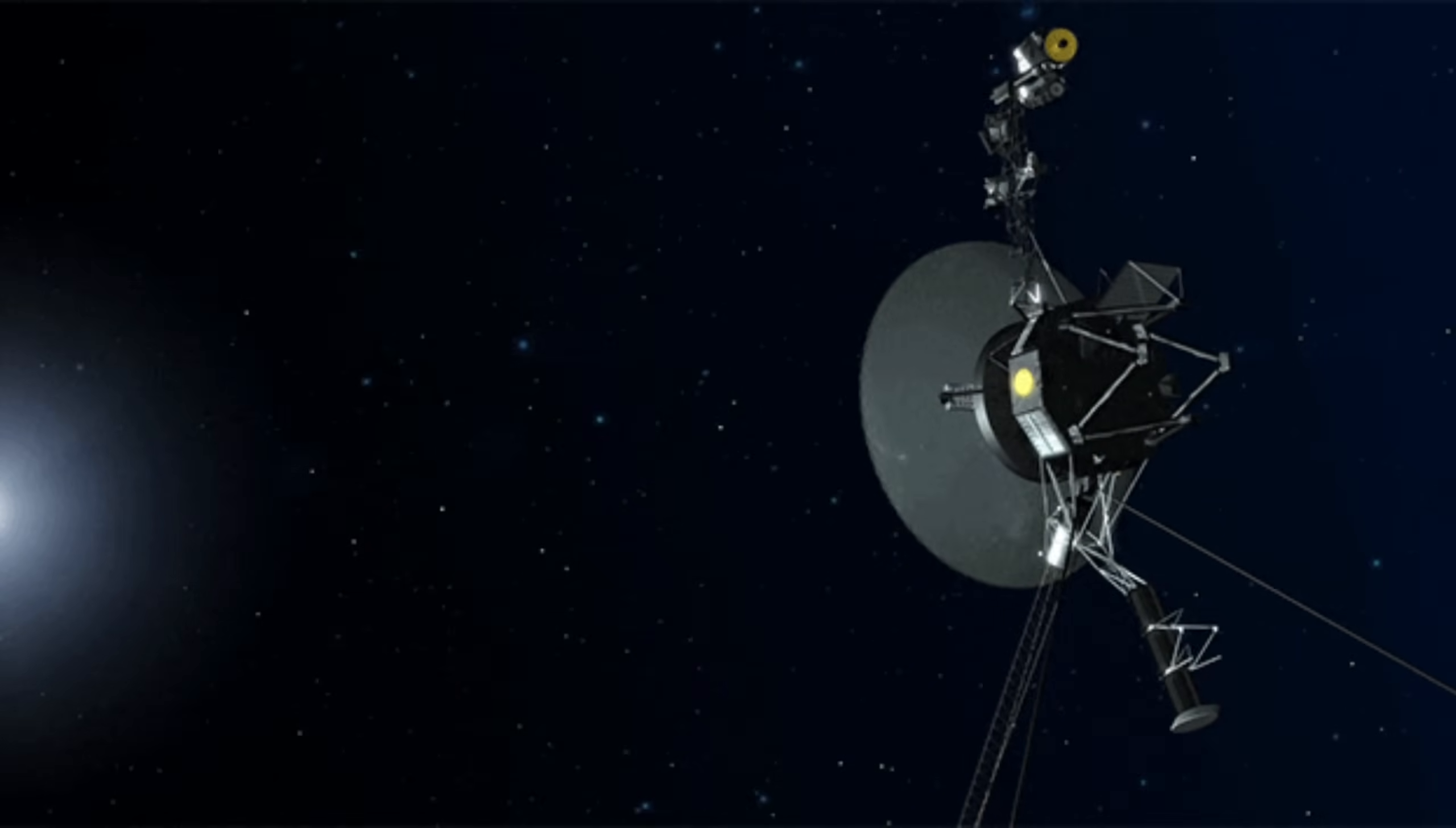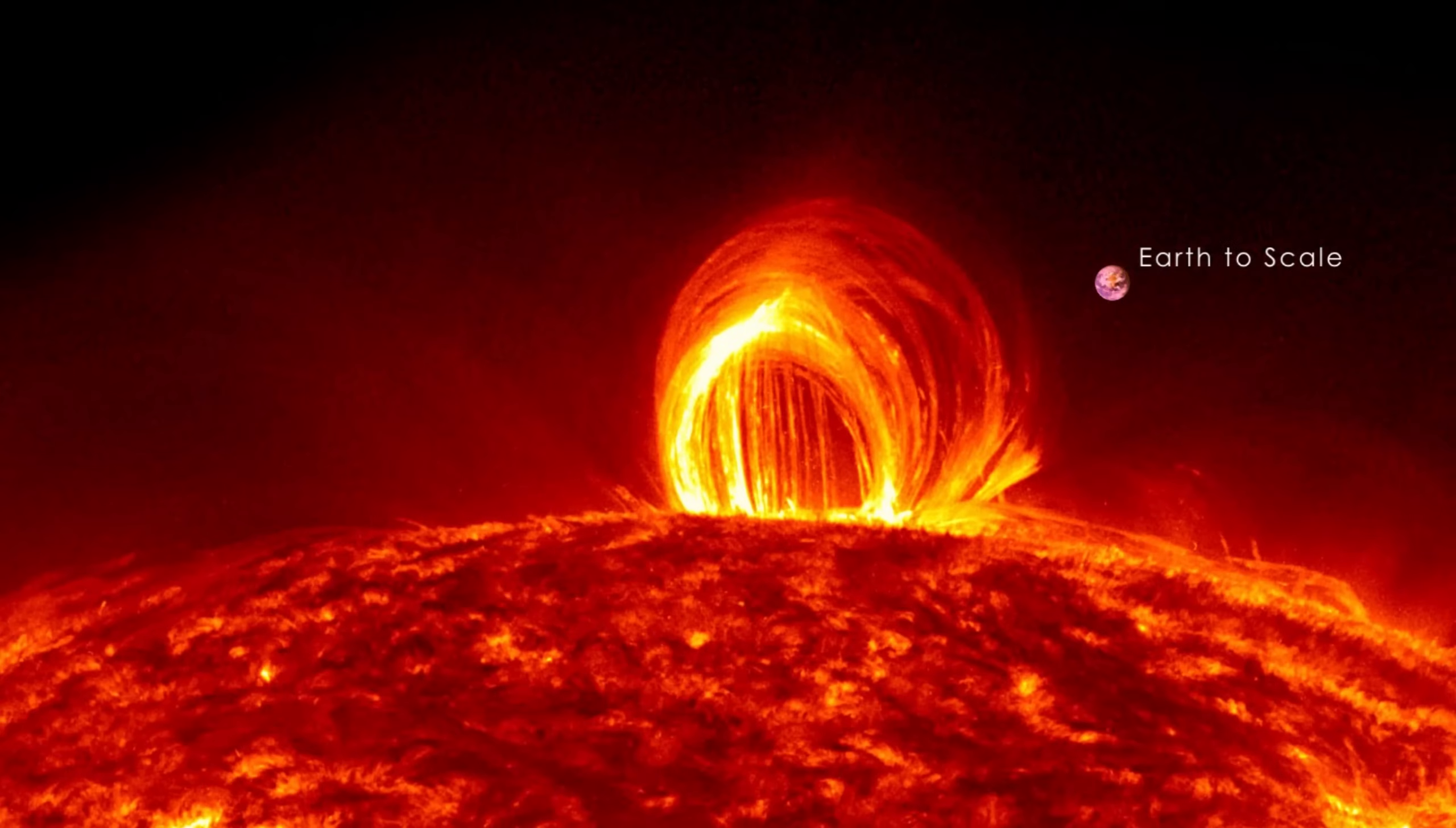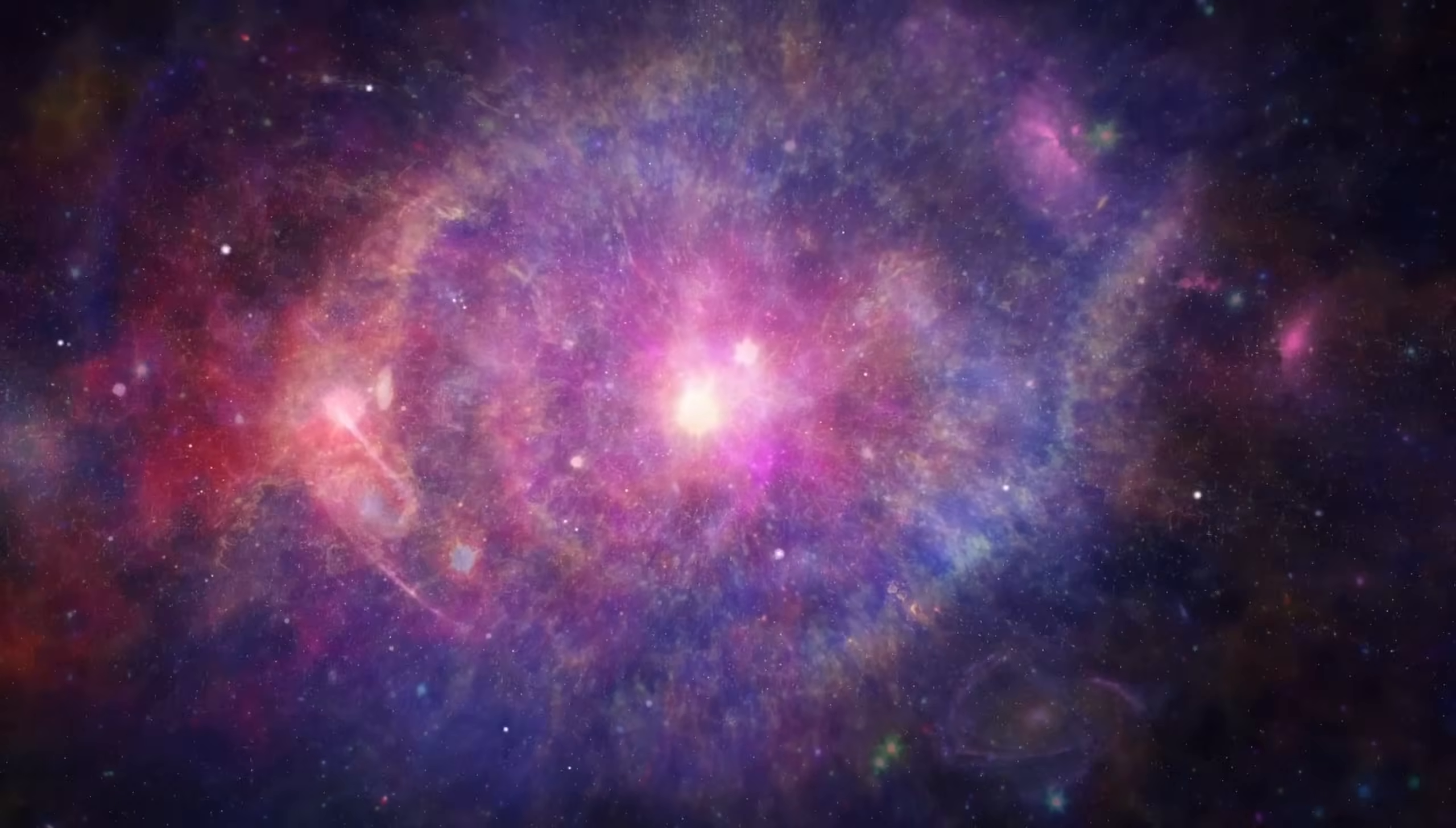In 2012, Voyager 1 made history by becoming the first spacecraft to enter interstellar space, with Voyager 2 following suit in 2018. Both probes detected unexpected changes in plasma density at the heliopause boundary, showing that this area was far more dynamic than anticipated. Since entering interstellar space, Voyager 1 has encountered plasma waves, mysterious ripples in interstellar plasma caused by solar outbursts. These waves reveal the density of the interstellar medium, helping scientists understand its composition.